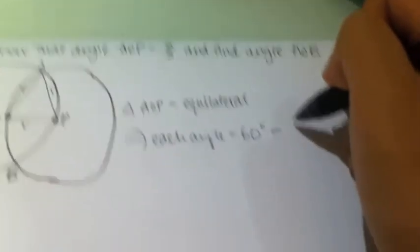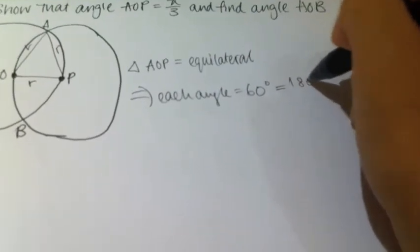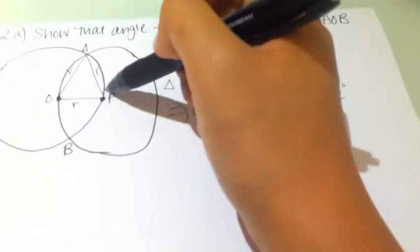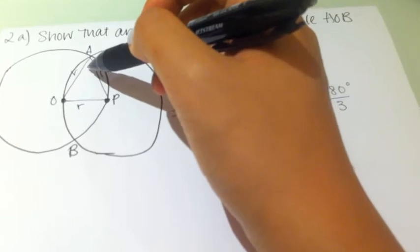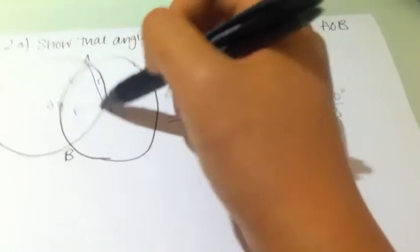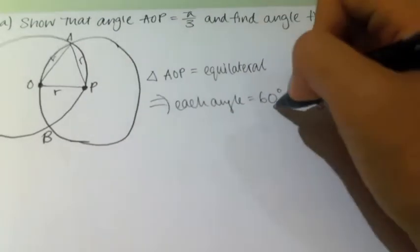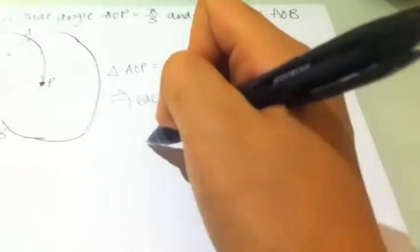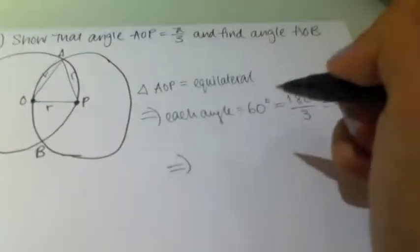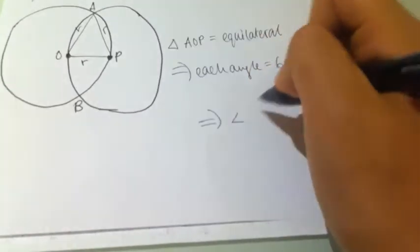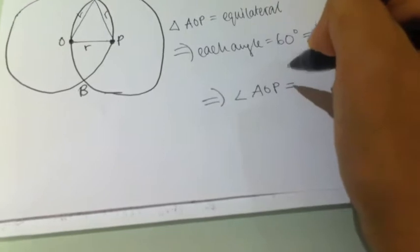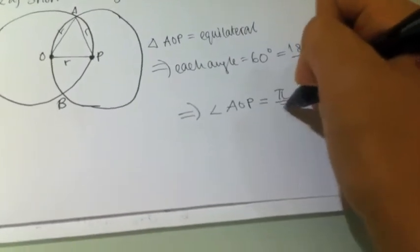Since triangle AOP is equilateral, each angle is 60 degrees. 60 degrees is 180 degrees divided by 3 — 180 degrees because all angles in a triangle add up to 180, and because it's equilateral you divide by 3 to get 60. That is equivalent to π/3. Therefore, angle AOP, which is one of the angles in triangle AOP, also equals π/3.